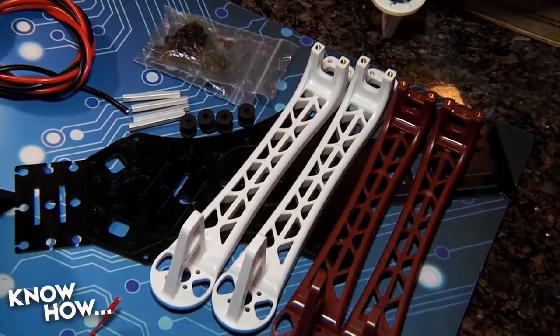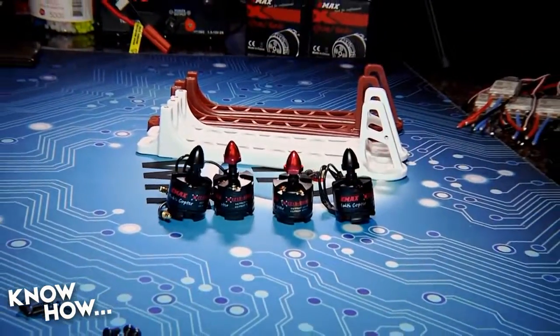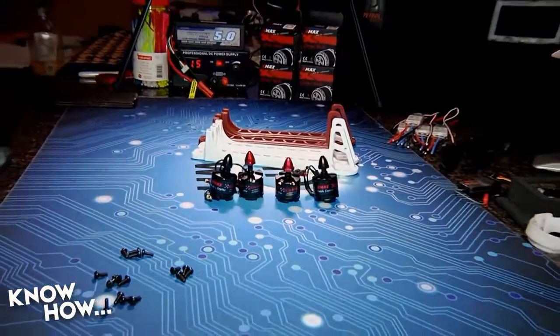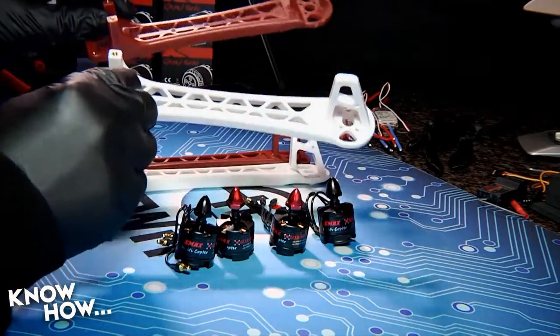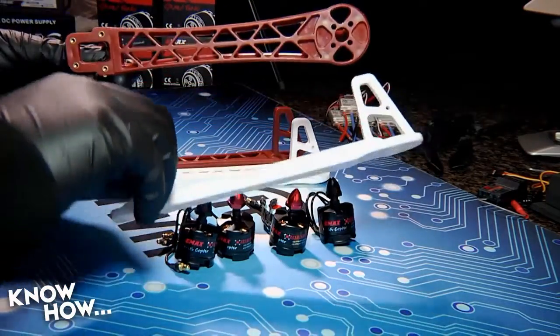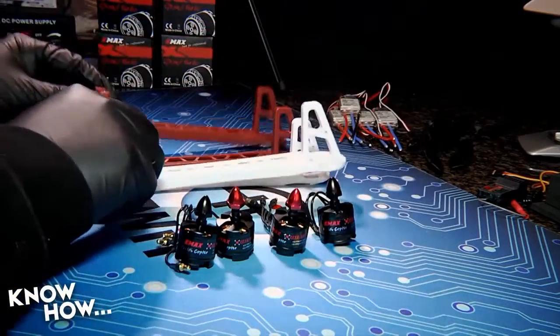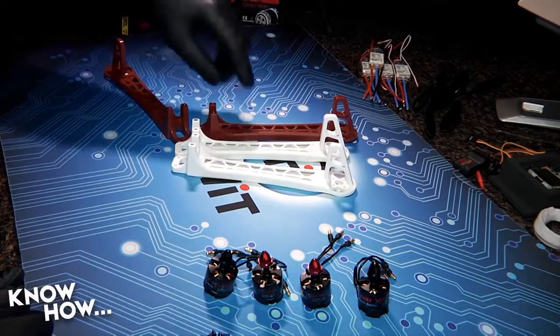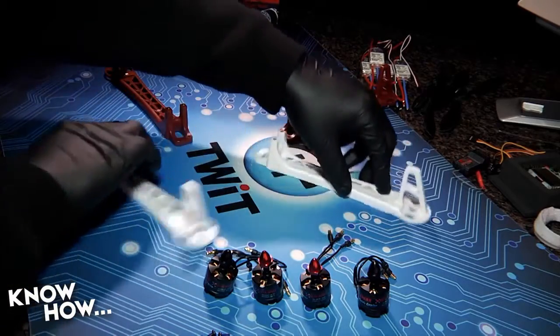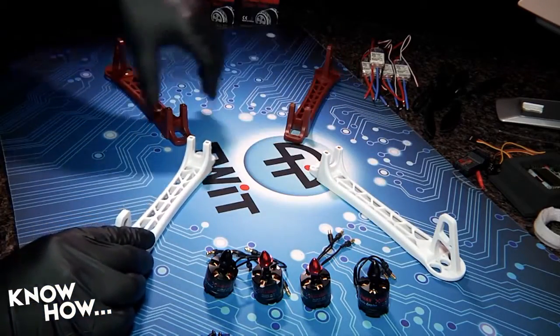The first step in integration is to mount the motors on the Alien X's arms. Your frame kit should have included four arms in two different colors. Decide which arms will be forward and which ones will be aft. Put a little time into this decision because you'll need to be able to easily see which way is forward and which is aft once the Alien X is airborne.